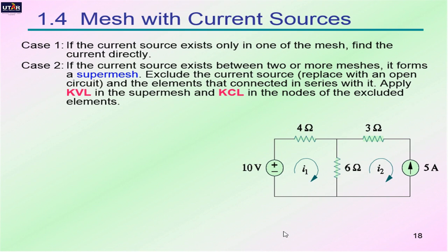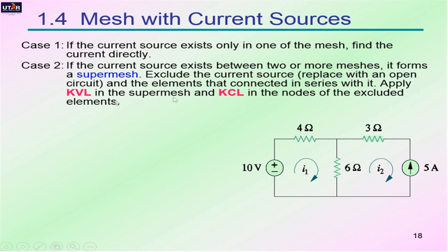The mesh and node analysis shown earlier represents the fundamentals of these two methods. However, things can be different when a current source exists in a circuit. There are two cases: first, if the current source exists only in one mesh, you can find the current directly. But if the current source exists between two or more meshes, we must use a different method known as super mesh. In super mesh, we exclude the current source and replace it with an open circuit, along with any elements connected in series with it, then apply KVL to the super mesh and KCL at the nodes of the excluded elements.